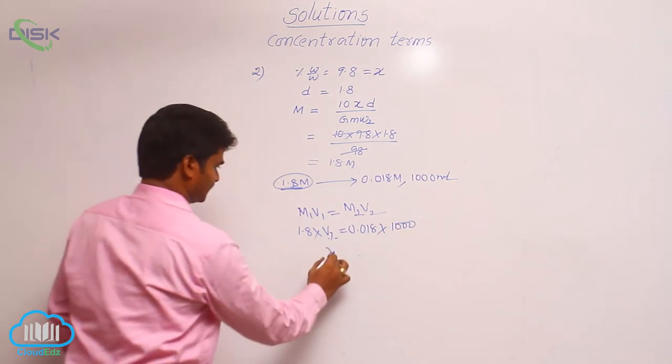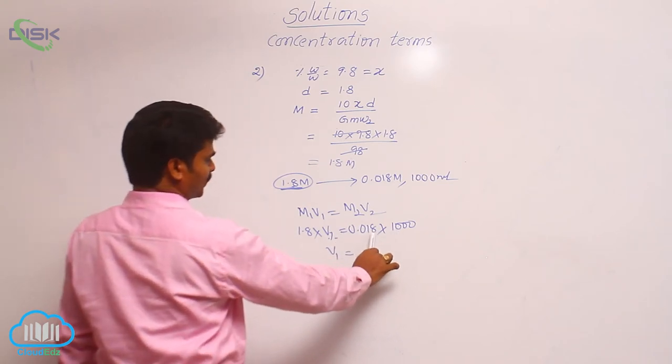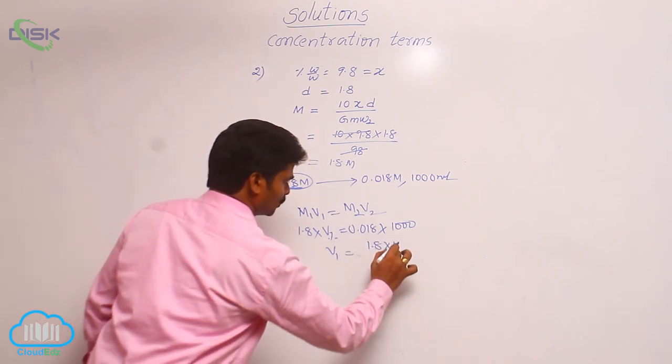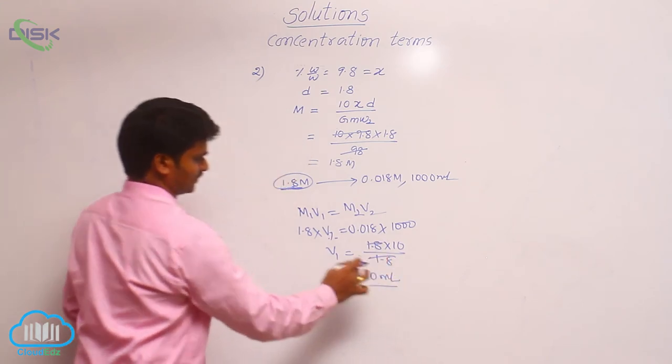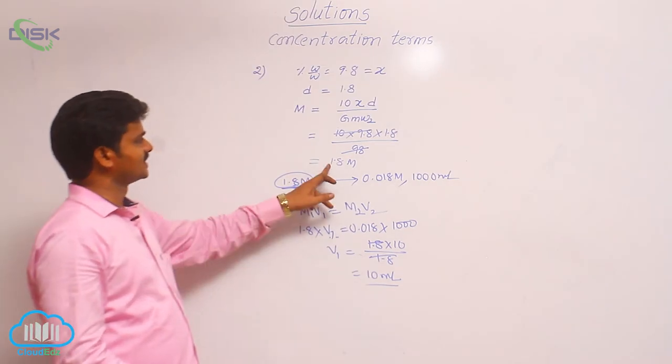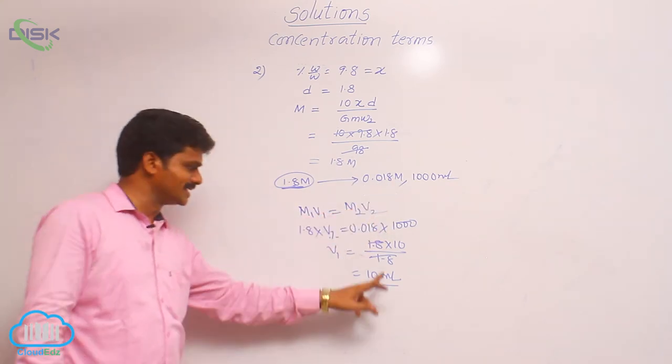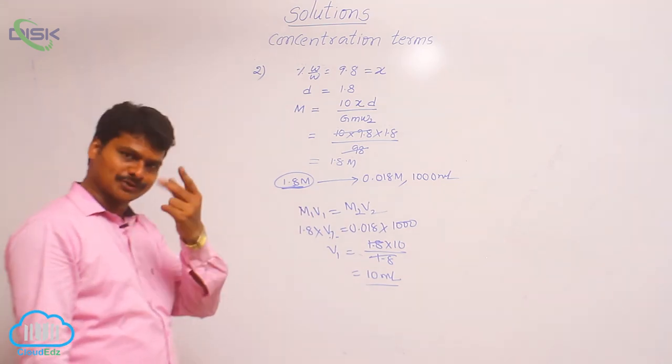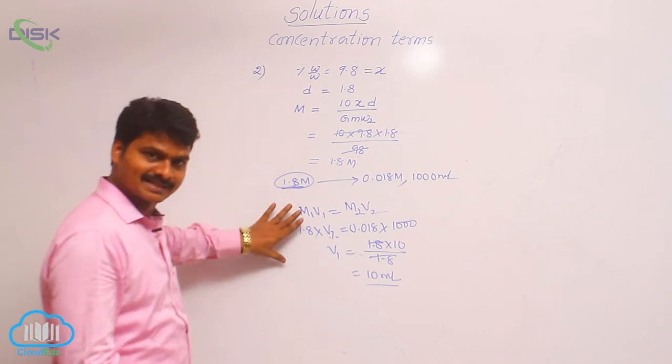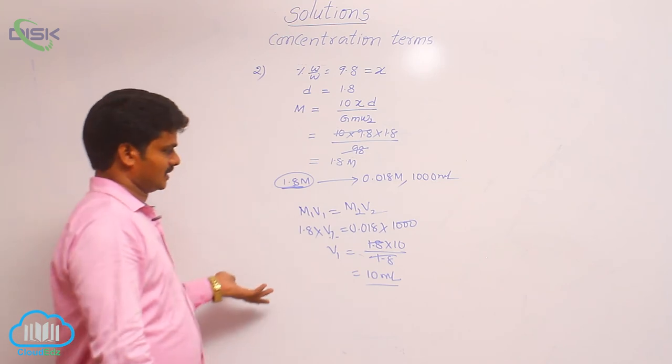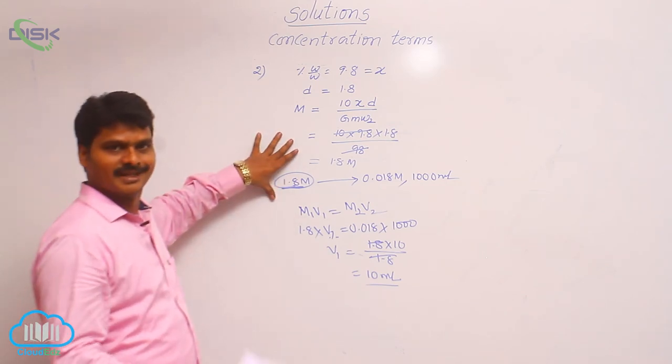So, from this, what is V1? V1 is equal to here 100 into this 0.018 means 1.8. So, we can write this term as 1.8 into 10 by 1.8. So, V1 is equal to 10 ml. Volume of initial 1.8 molar solution required to prepare 0.018 molar solution is 10 ml. So, here we have two steps. In the first step, I have calculated the molarity of the given solution. In the second step, I have calculated the volume of the initial solution that is diluted to 1000 ml. This type of question will be given in objective.